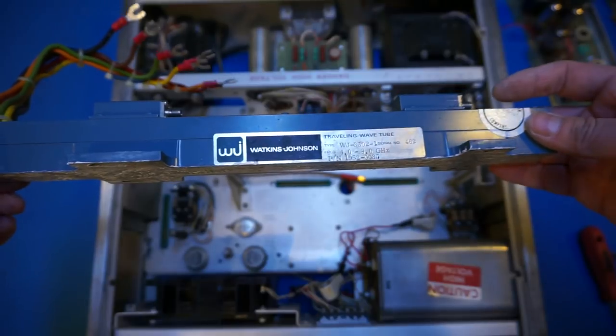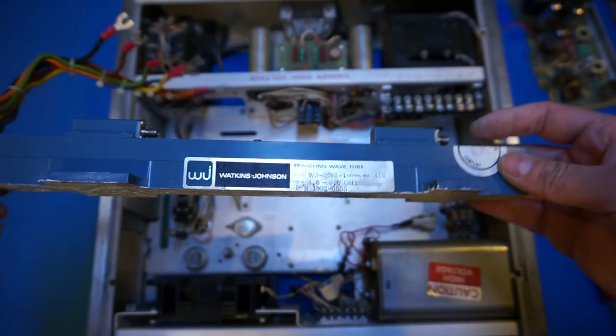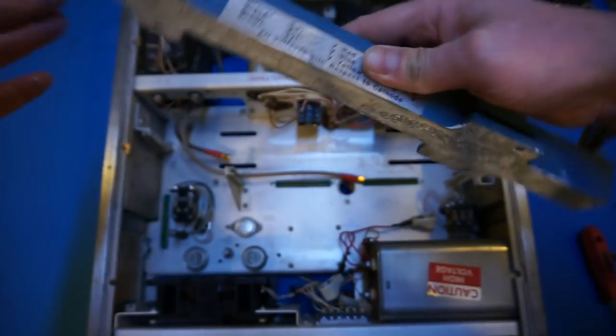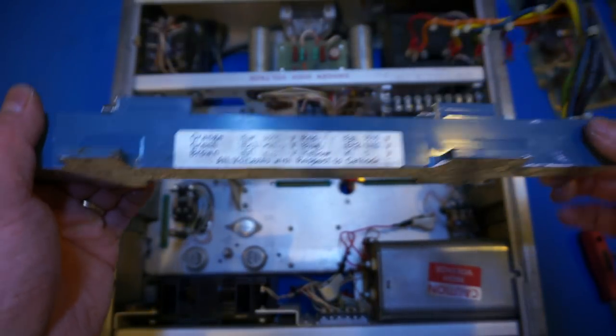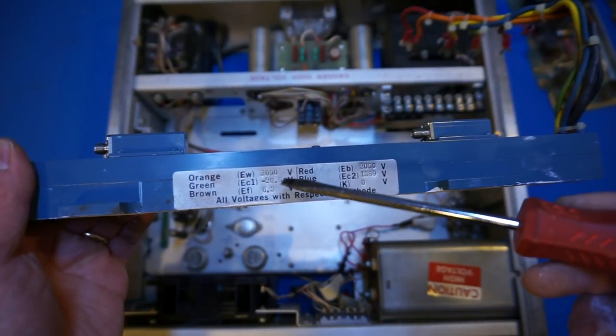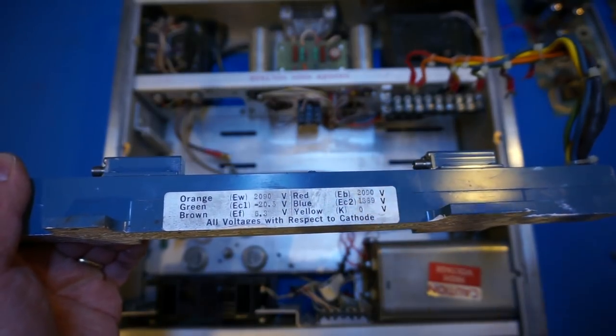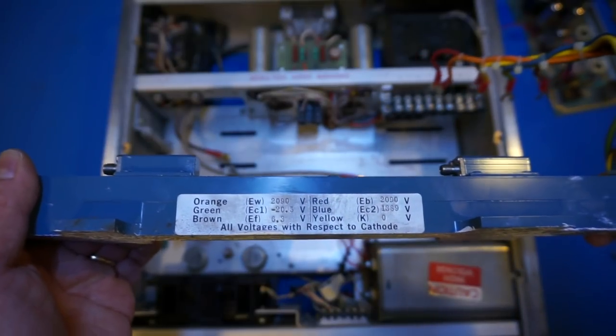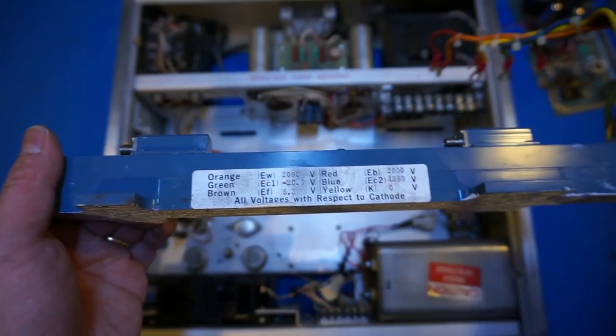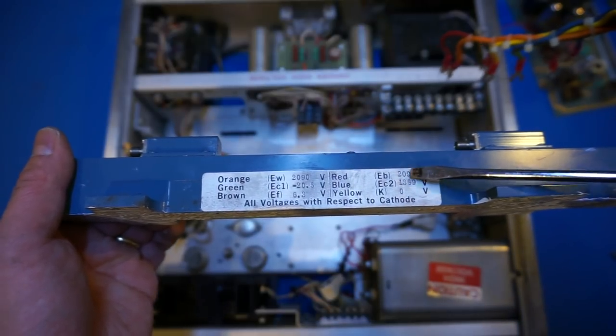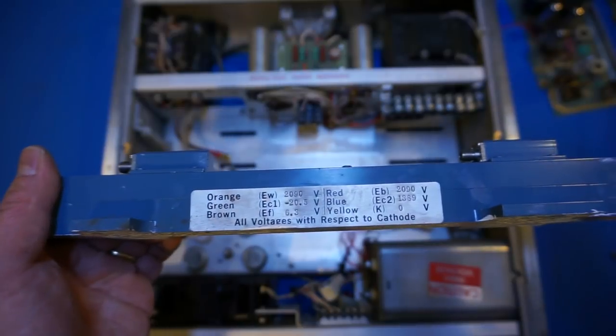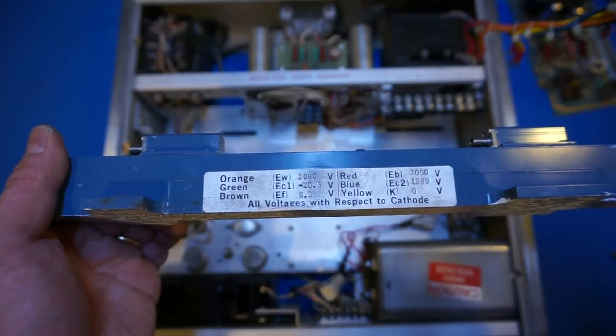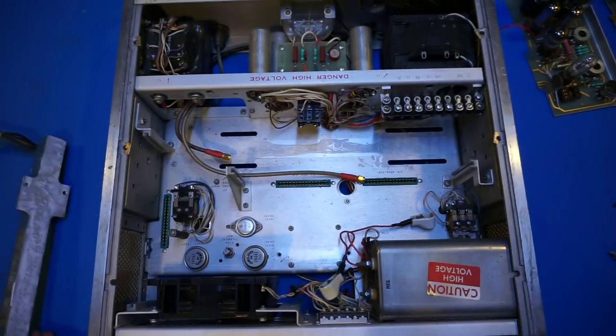And now we have freed the traveling wave tube out from its casing. And of course we're going to take this further down. But here let's take a look. Watkins Johnson. And it's a 4 to 8 gigahertz. And there's some thermal conductive material at the bottom. And you can see that the voltages are actually printed on it. And these are the operating voltages. So the idea is that you adjust the trim pots on the high voltage supply and the various biasing circuitry to make sure that it is in line with what is printed here. Now each of these tubes are individually characterized. So that the printed out values are actually all different.